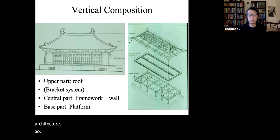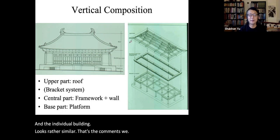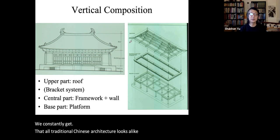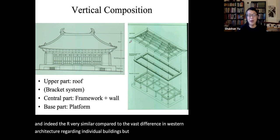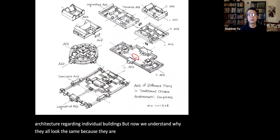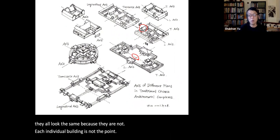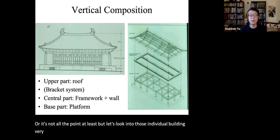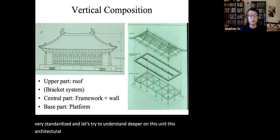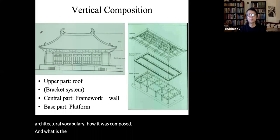Individual buildings look rather similar, and that is the comment we constantly get — that all traditional Chinese architecture looks alike. Indeed, they are very similar compared to the vast difference in Western architecture regarding individual buildings. But now we understand why: each individual building is not the point. Let's look into these very standardized units and try to understand deeper this architectural vocabulary, how it was composed and what the technical detail is.